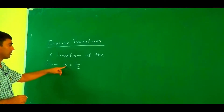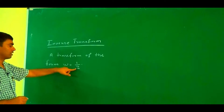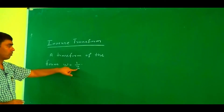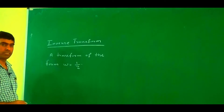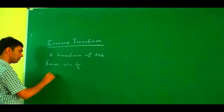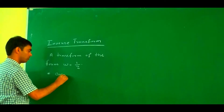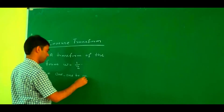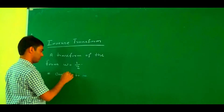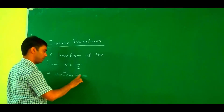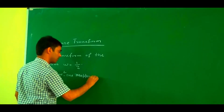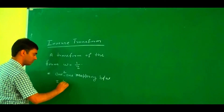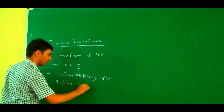Closely observe: w = 1/z means for one point z there is exactly one corresponding point in the w-plane. For one point in the z-plane there is one point in the w-plane — this is a one-to-one mapping between the z-plane and the w-plane.